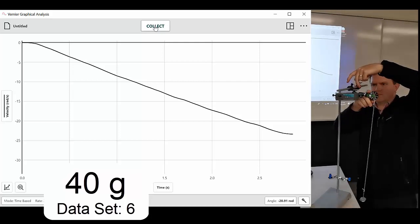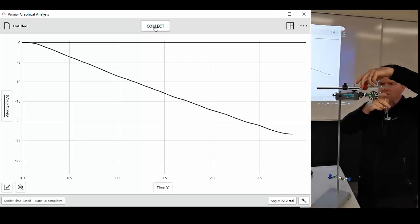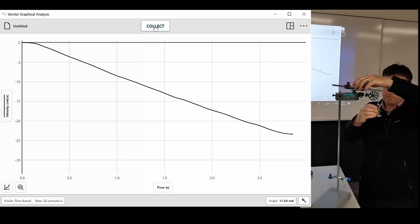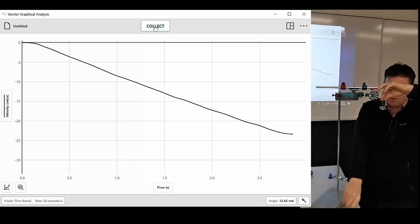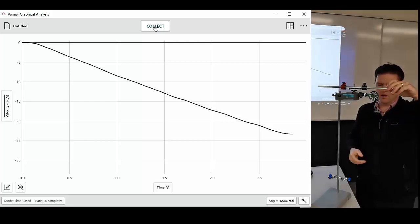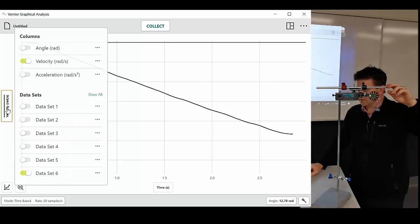So I'm going to take another 10 grams off. So now I have two hanging masses and the hanger so that makes 30 grams, 30 grams for data set 7.